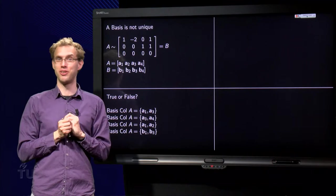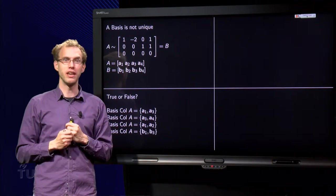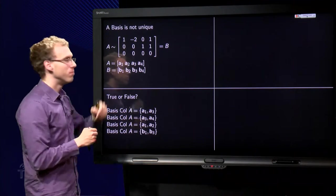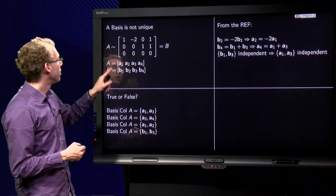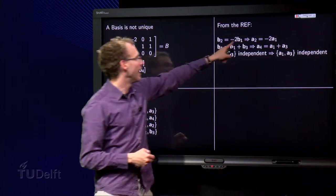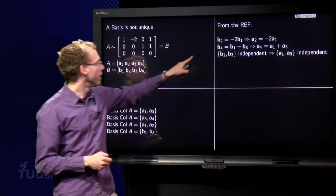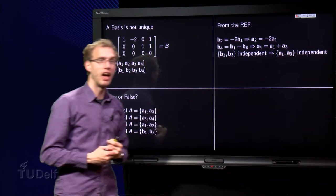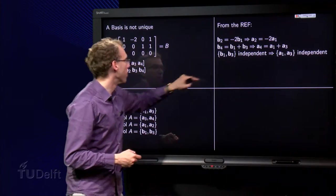True or false? Four questions. The basis of col A is a set consisting of A1 and A3. Well, we do not know exactly A, but we know B and we know that the dependent relations will stay the same. So we see B2 equals minus 2 times B1, so that means A2 equals minus 2 times A1. And we know B4 equals B1 plus B3, this one plus this one, so we also know A4 equals A1 plus A3. That means that B1 and B3, you can immediately see that those are independent.